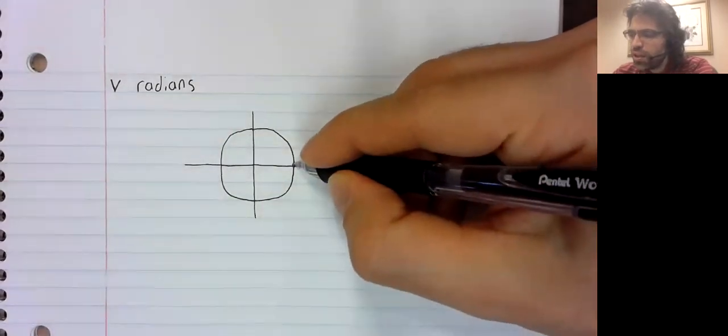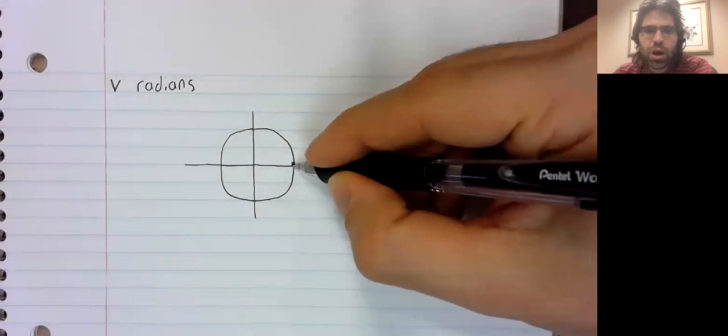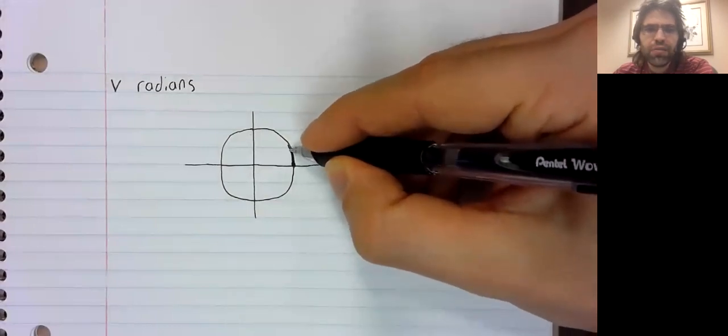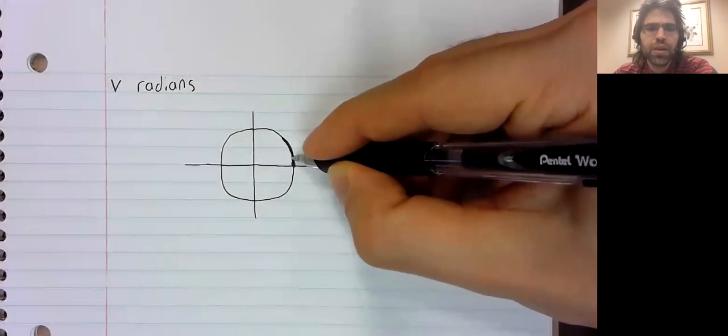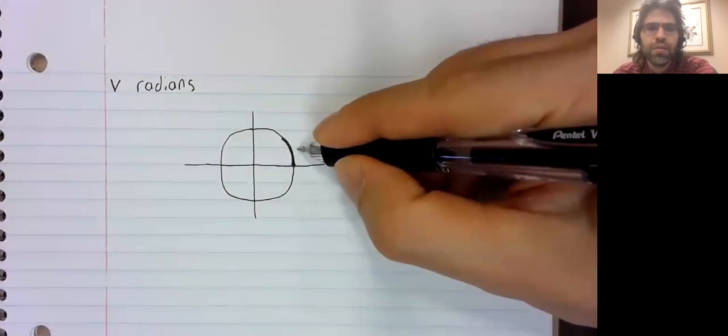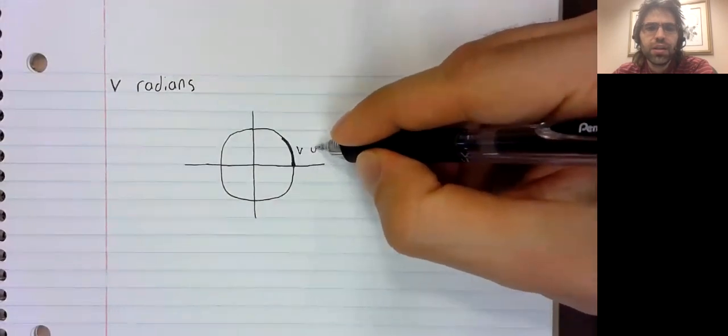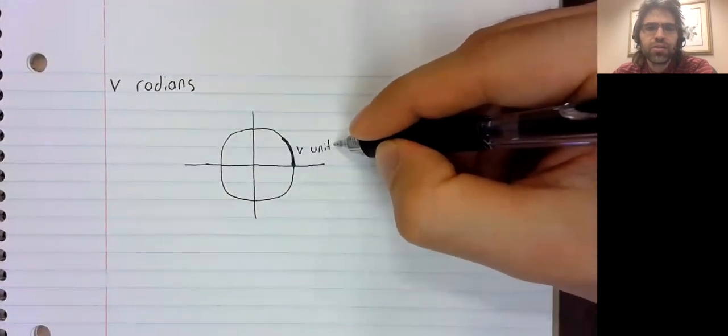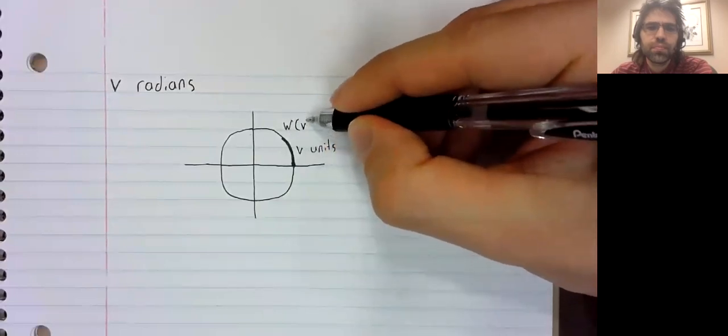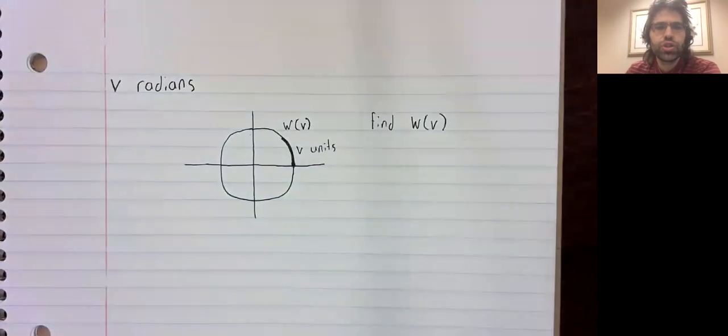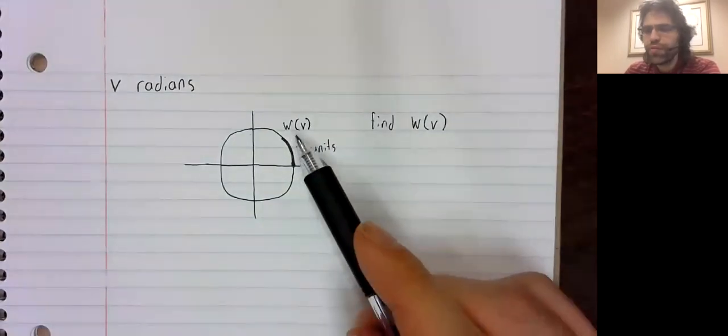Let's say that V is positive. So we travel counterclockwise V units to reach W of V.